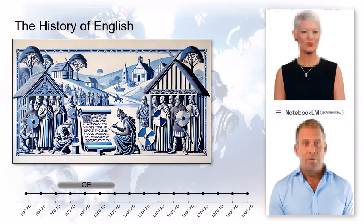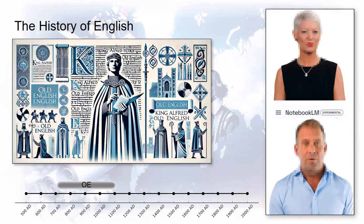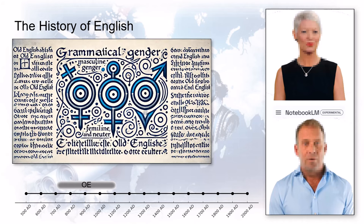You'd need a whole new language app for that. It's fascinating how much structure Old English had — but different. For instance, even objects had genders. A table wasn't just a table; it could be masculine or feminine, changing the whole sentence. Wild. But even if it sounds totally different, Old English is where it all began.